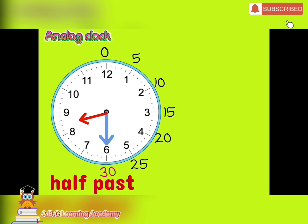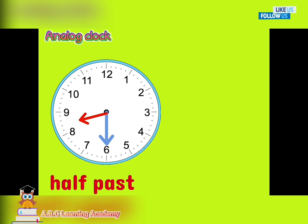So, half-past is 30 minutes, or we can say that half of the rotation is 30 minutes. That is why, when the minute hand is pointing at 6, we say half-past of something, because the minute hand went through halfway around the clock.